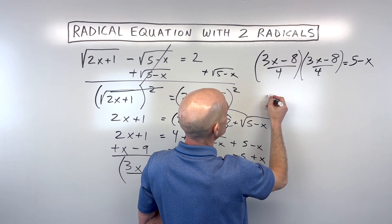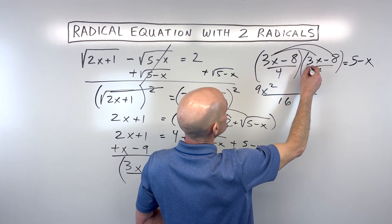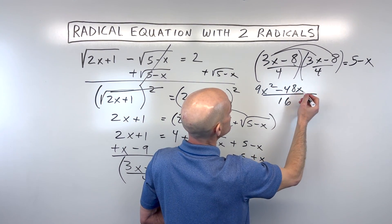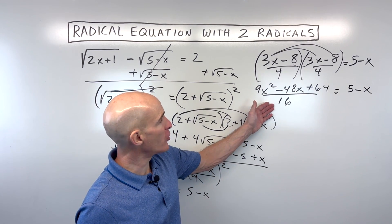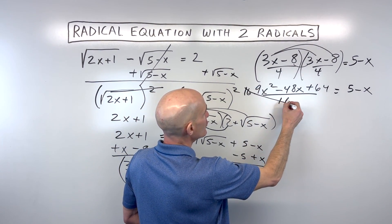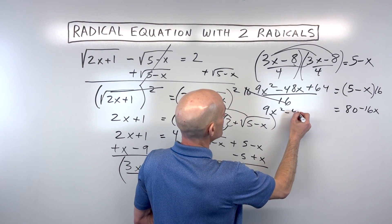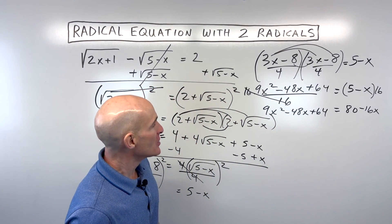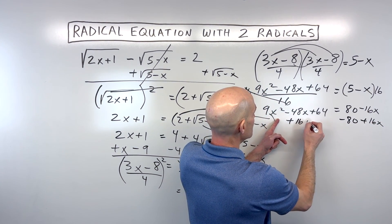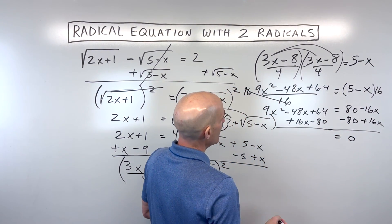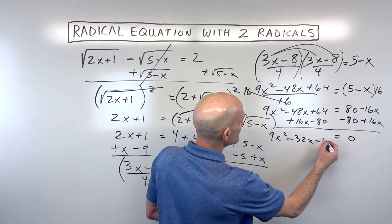Multiplying the denominators gives 16. In the numerator we FOIL: 3x times 3x is 9x squared, then negative 24x and negative 24x gives negative 48x, and negative 8 times negative 8 is positive 64. That equals 5 minus x. Multiplying both sides by 16 cancels the fraction and gives 80 minus 16x on the right. Getting everything to one side — subtracting 80 and adding 16x — we get 9x squared minus 32x minus 16 equals zero.